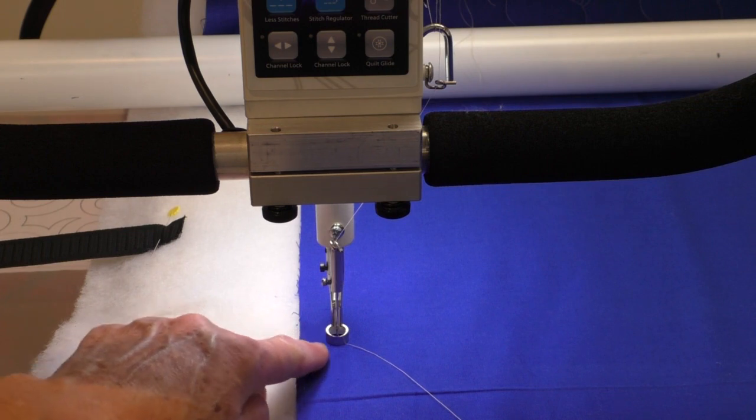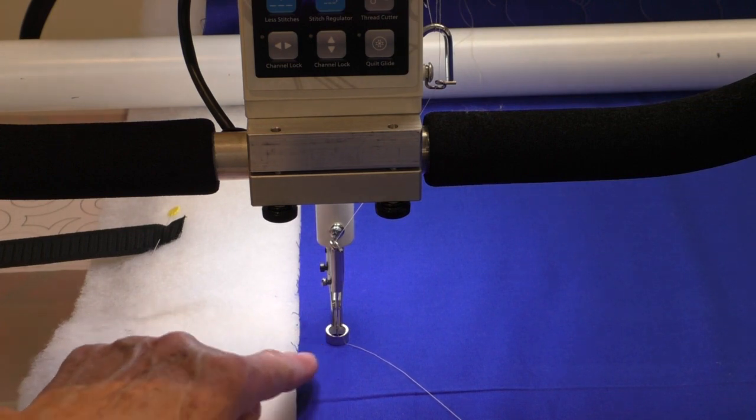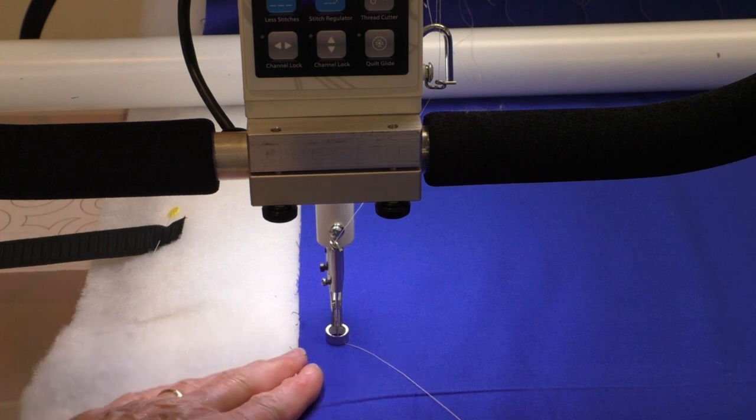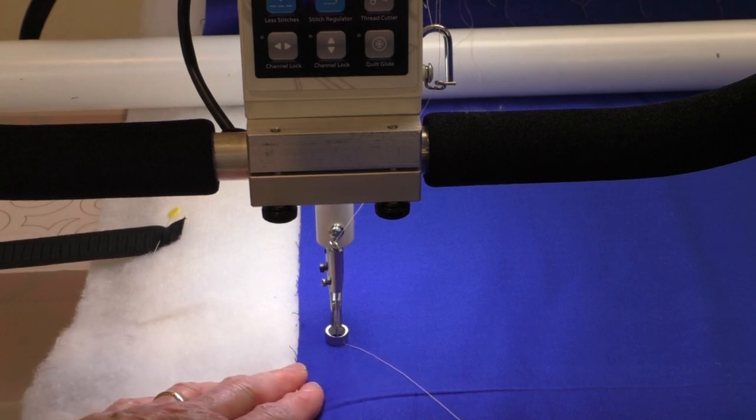The next technique I'll show you is how to move the machine in a zigzag stitch right along the outer edge with the machine just catching little bits and pieces of the quilt and the backing and the batting as well. I personally like to turn off the stitch regulator to do this technique, but you certainly can leave it on if you like.